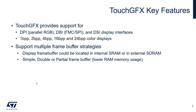The L8 RGB 565 frame buffer format support is also a way to reduce the size of the frame buffer. In this case, instead of storing 16-bit pixel values, only 8-bit values are stored. These 8-bit values are indexes used to retrieve the actual pixel values from a lookup table.